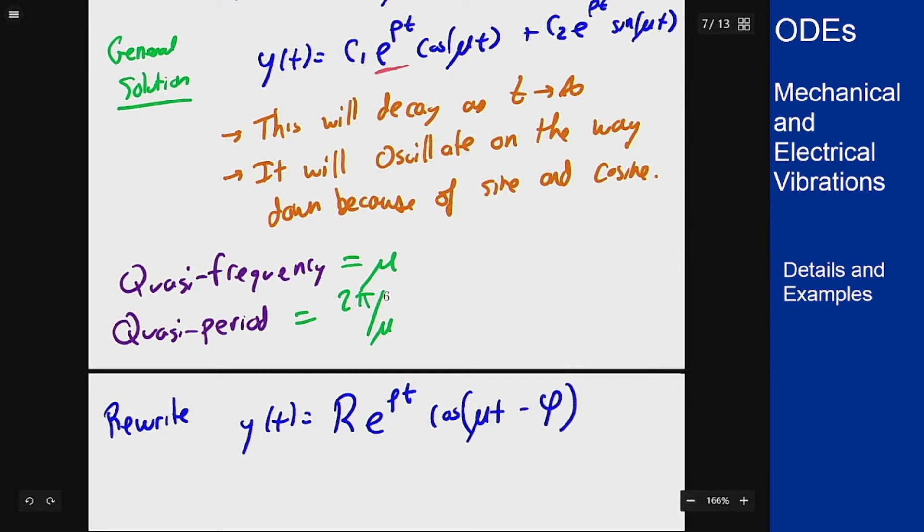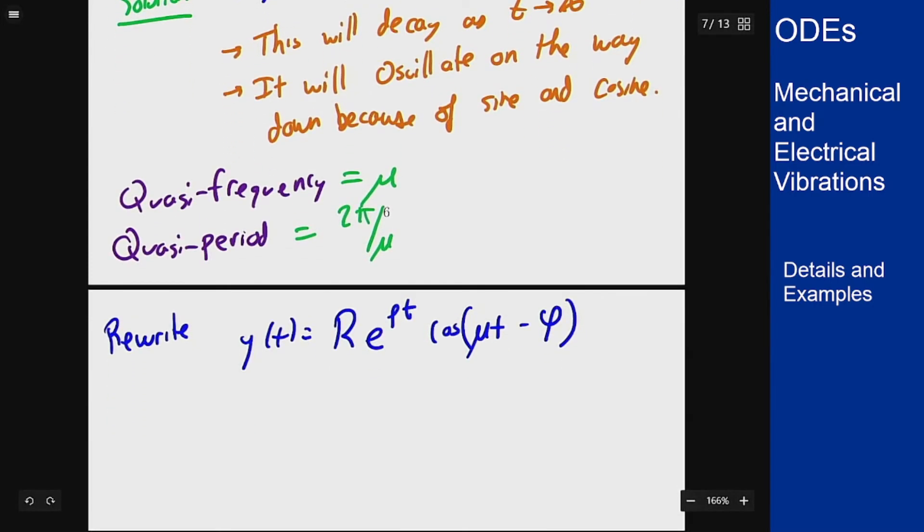by factoring out the e^(ρt) from both terms and then using the same tricks from undamped to combine the two trig functions into a single trig function. And when we do that we can notice based on this function here, cosine is always between -1 and 1.